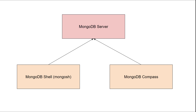Then there is another thing called MongoDB Compass. The shell is a console — a terminal — and MongoDB Compass is a graphical user interface, or GUI, using which you can connect to the MongoDB server. So these are the two ways to connect to the MongoDB database: one is the interactive shell built on top of JavaScript called MongoDB shell or Mongosh, and then we have MongoDB Compass, which is a GUI — a nice UI using which you can play around with the database.